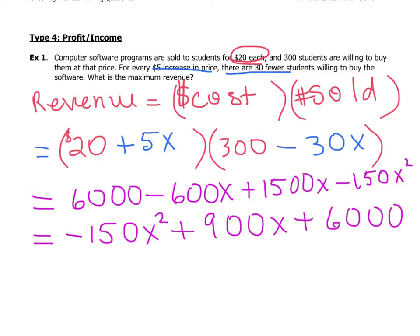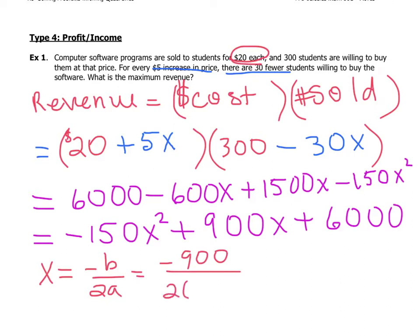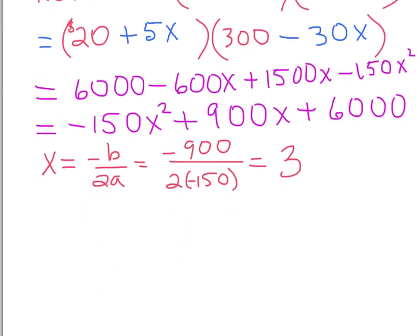From this point we need to find the x-value of the vertex, which tells us how many times to increase the price to get maximum revenue. Using x = −b / 2a, that's −900 divided by 2 times −150, which gives us x = 3.